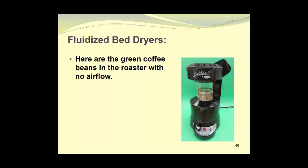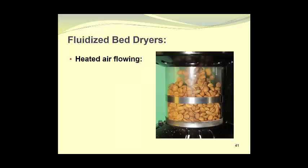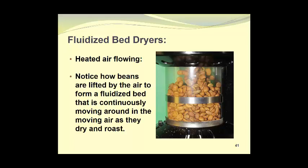Here are the green coffee beans in the roaster with no air flow. Here we see the fluidized bed with the heated air flowing. Notice how the beans are lifted by the air to form a fluidized bed that is continuously moving around in the moving air as they dry and roast. So basically what we have is an upward flow of hot air that lifts the beans and when they get to the top they are tossed to the outside. They then travel downwards and come back up the center. So what we end up with is a continuous circulating pattern of beans going up through the middle and down the sides and continuously being suspended in this hot drying air.